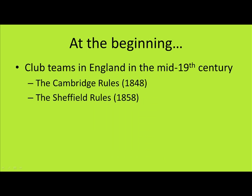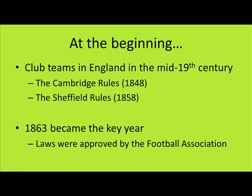Now you know that soccer does not have any rules, but it was not the case at the very beginning. In history, people played soccer, but there were no universal rules or laws. It was only in the mid-19th century that there were two attempts to establish a set of universal rules, called the Cambridge rules and the Sheffield rules. These trials happened in England, and in 1863, the Football Association in England created the Football Association Laws, which is considered to be the origin of the laws that we have today.